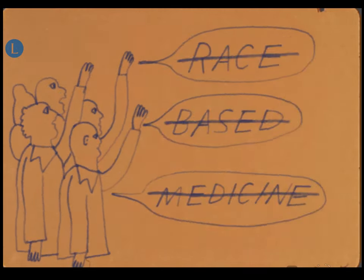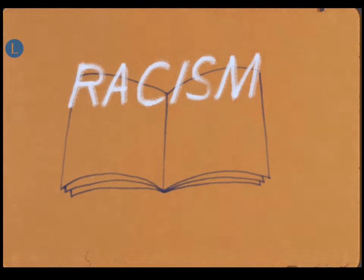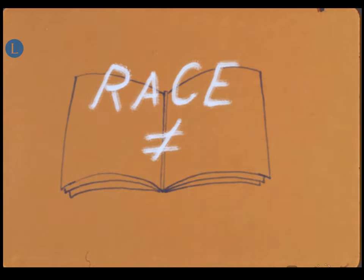Third, we need clinical societies to pass resolutions that denounce race-based medicine. Finally, we need to ensure that research involving race carefully accounts for the effects of racism, rather than using race as a proxy for genetics.